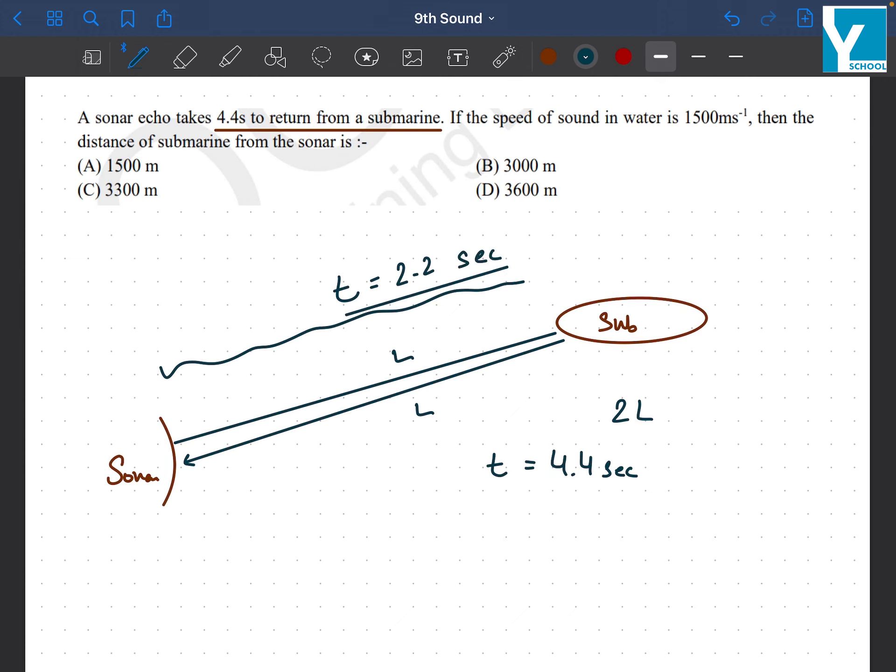Speed is given, distance is asked. We are looking for L, the length. We'll use the formula: velocity V equals distance upon time. So we can say distance L equals velocity times time.